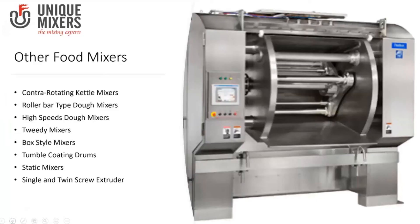Besides the classification of liquid, solid, and high-viscosity mixers, there are other special mixers used in the food industry depending on the application. These include contra-rotating kettle mixers, roller bar type dough mixers, high-speed dough mixers as seen in the image, tweedy mixers, box style mixers, tumble coating plants, static or inline mixers, and single and twin screw extruders. These equipment are employed for very specific applications.